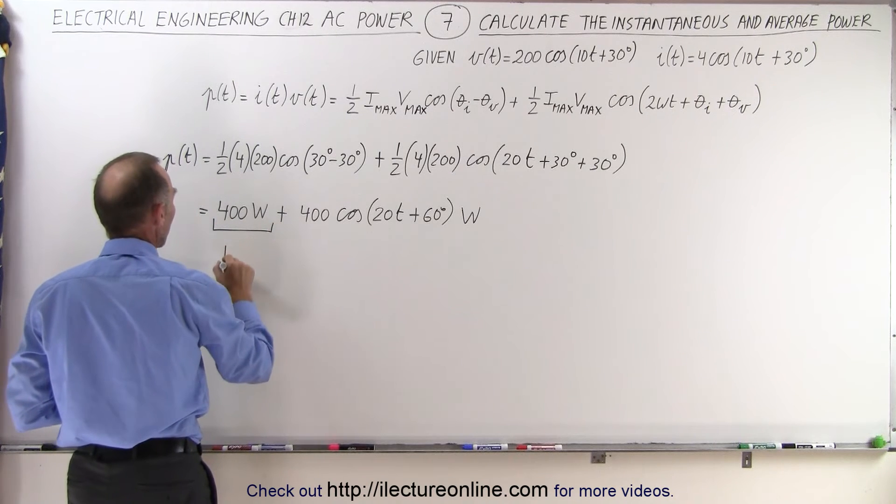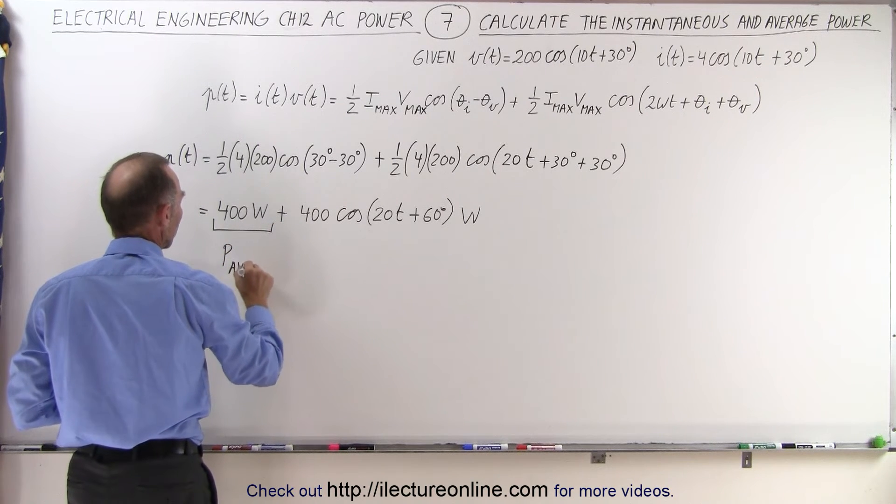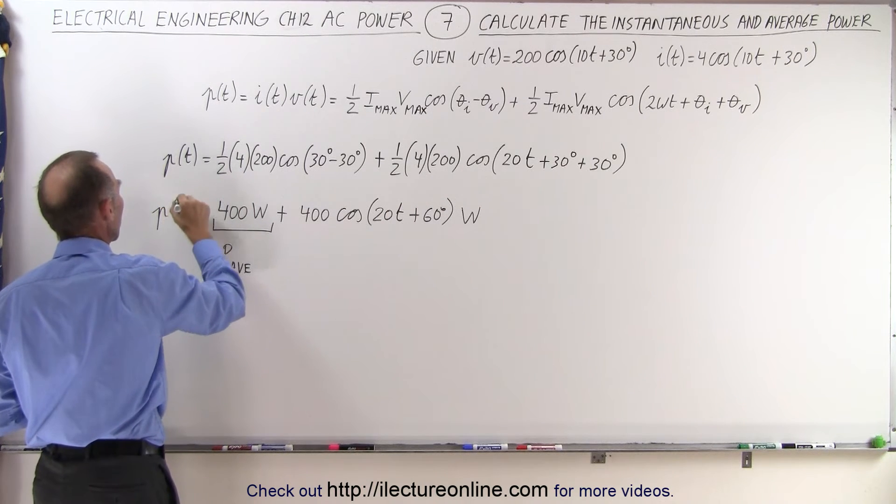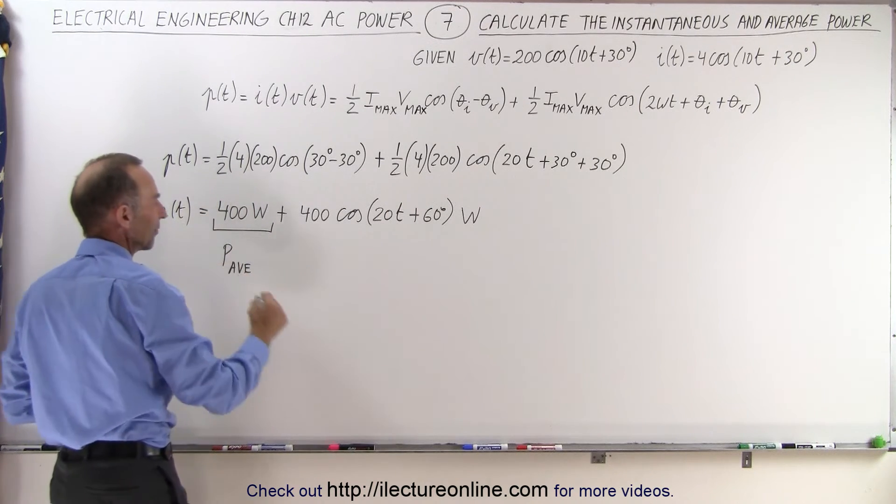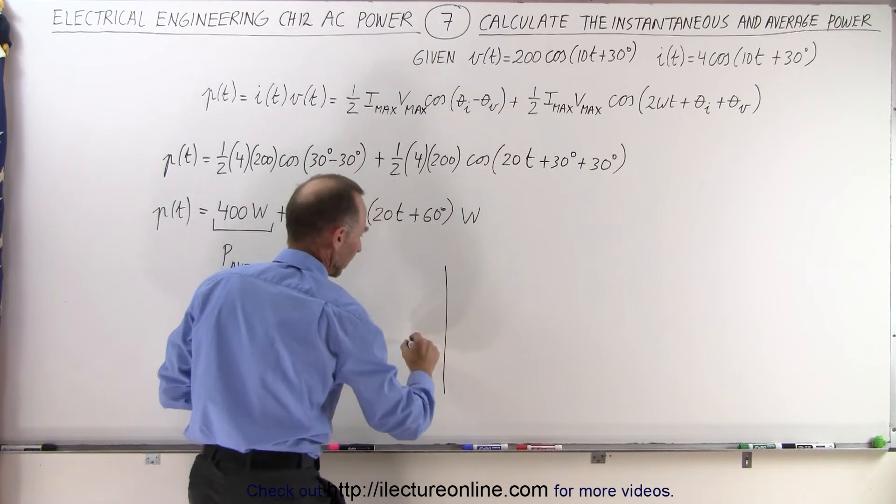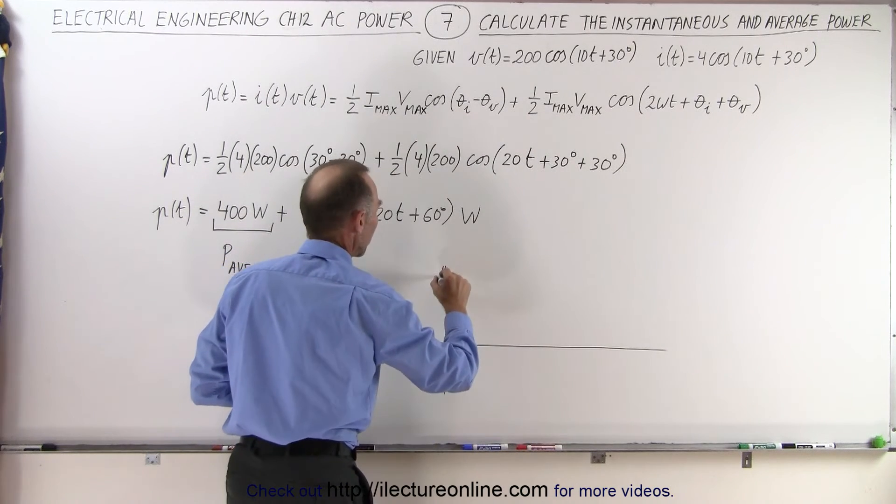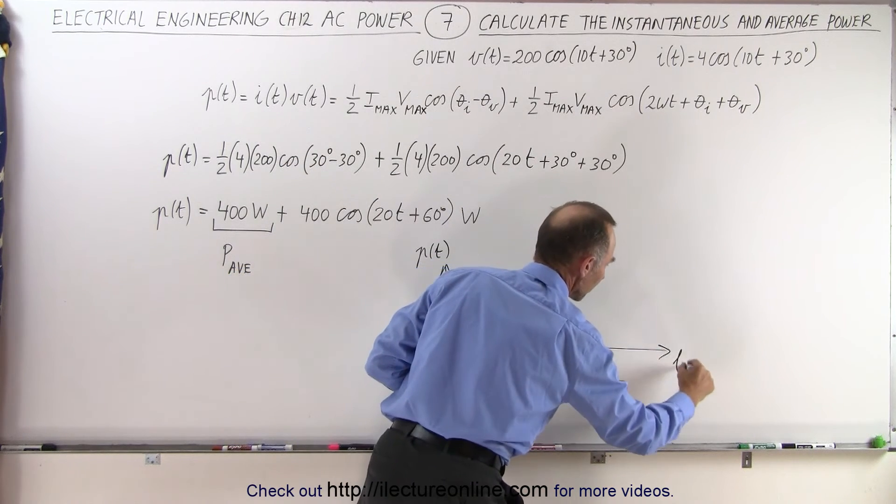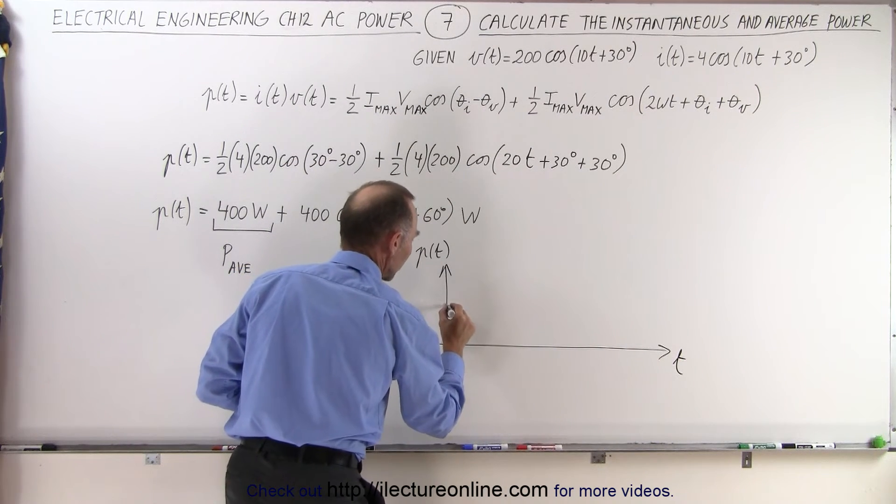So this here is the power average, and the sum of the two gives us the instantaneous power. And then if you want to graph that to see what that looks like, this would be the power as a function of time. This is time.